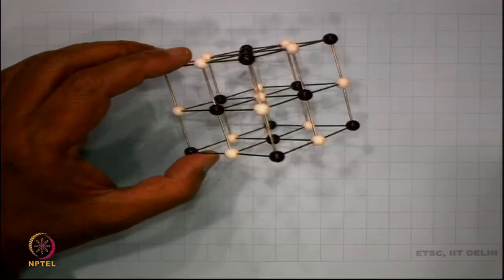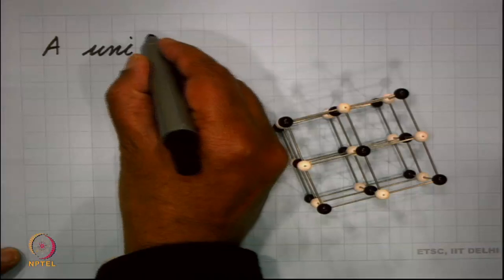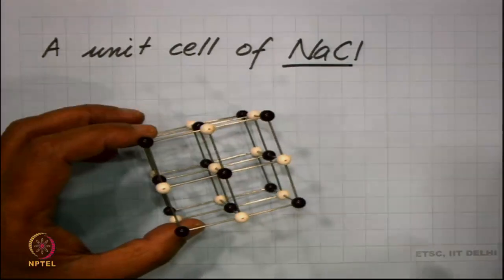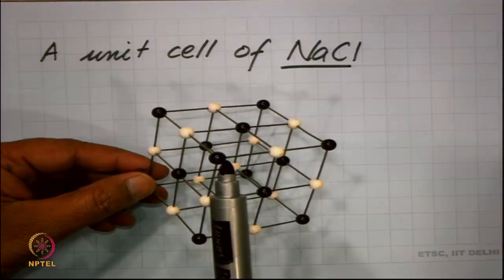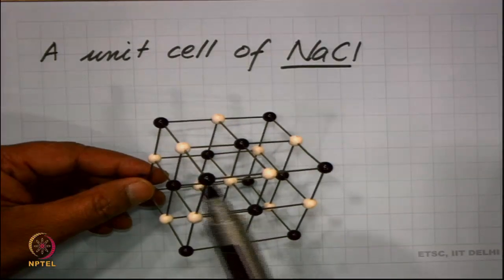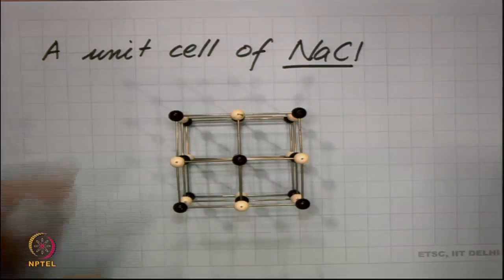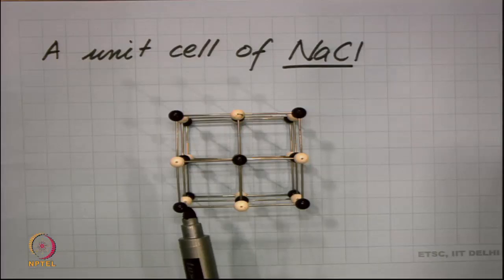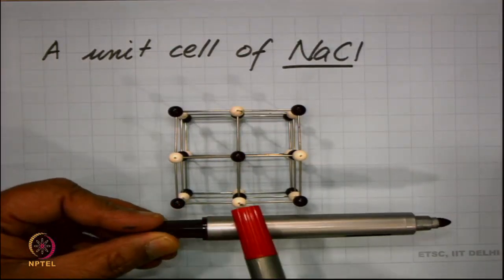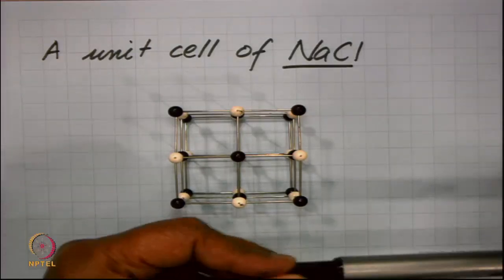Here is a unit cell of sodium chloride. The black atoms you can consider as chlorine, the white ones as sodium. What we mean by three-dimensional periodic arrangement is that these chlorine and sodium atoms are repeating in each direction at equal distances. For example, if we look along the cube edge, we start with chlorine, then after a certain distance we find sodium, and then chlorine again. If we continue in this direction, we keep finding chlorine, sodium, chlorine, sodium — and so on. That is what is meant by periodicity.